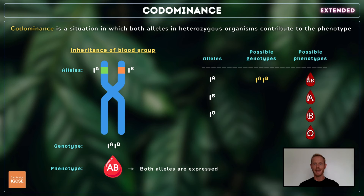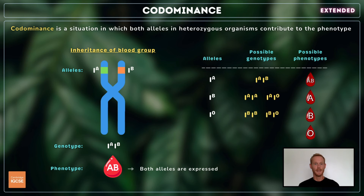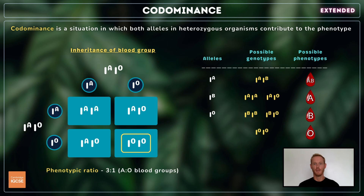If a person inherits alleles for A and B from their parents, their blood group will be AB because A and B are codominant. However, the alleles for groups A and B are both completely dominant to the allele for group O. Therefore, a group A person could have the genotype AA or AO, a group B person could be BB or BO, but a group O person will always be OO. Blood group O can be inherited even if neither parent shows this phenotype — if the mother and father are both AO, there will be a 3:1 ratio of A to O blood groups in the resulting offspring.